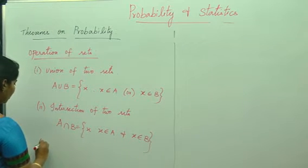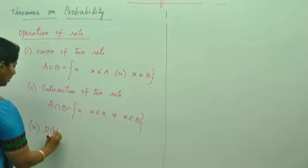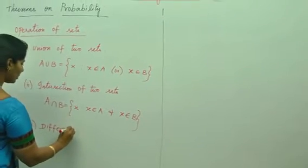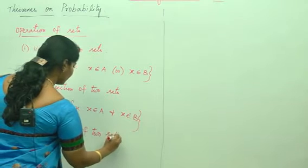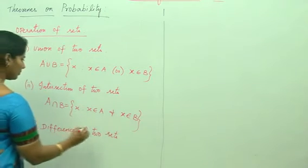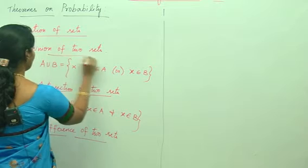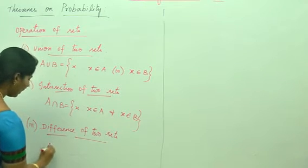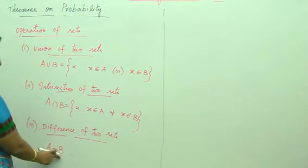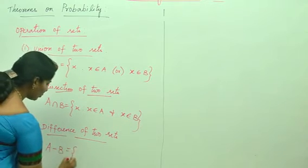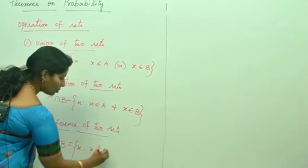The third one is the difference of two sets. A minus B, that is A difference B, which is equals to the set of X such that X does not belong to A.